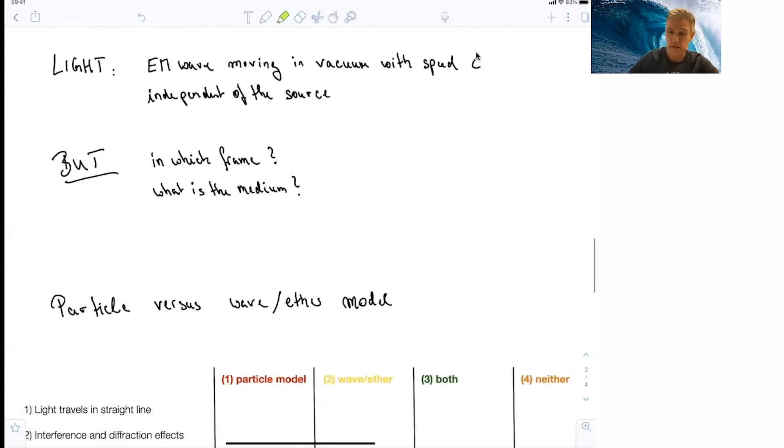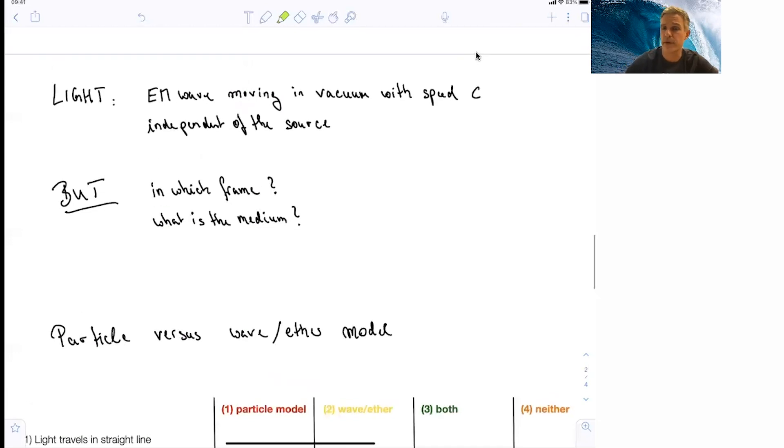So for light, as a summary, light is an electromagnetic wave which is moving in vacuum with speed c. And that is independent of the source. But you can ask, in which frame? In which frame is that the velocity of light? And what is the medium? And that is really the discussion we want to carry on from here.